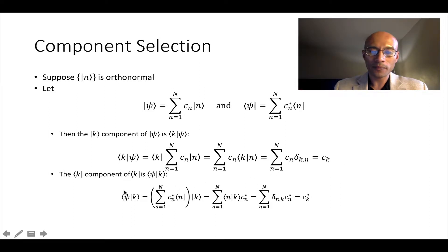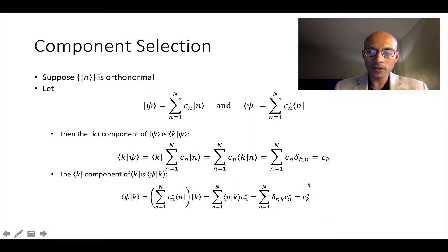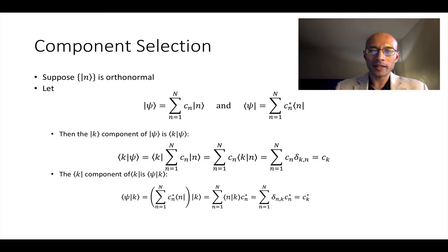Similarly, if we have bra psi and we right multiply by ket k, we can go through and extract the k-th coefficient again. So you're seeing here component selection by multiplication with one of the basis bras or kets. If we want to select the k-th ket component, we multiply by bra k. And similarly, if we want to get the k-th bra component, we multiply by ket k.